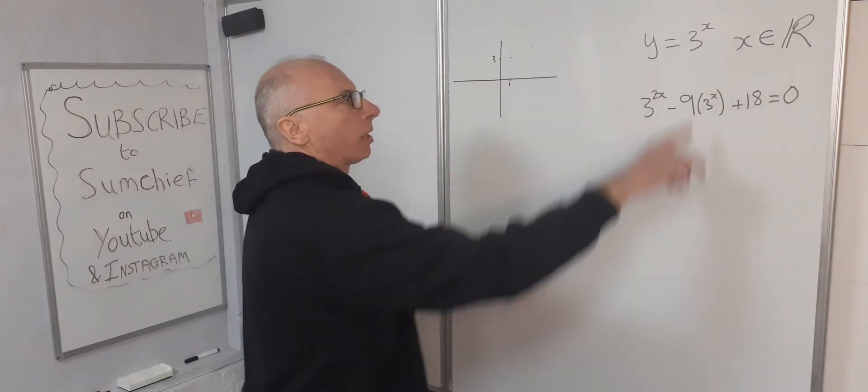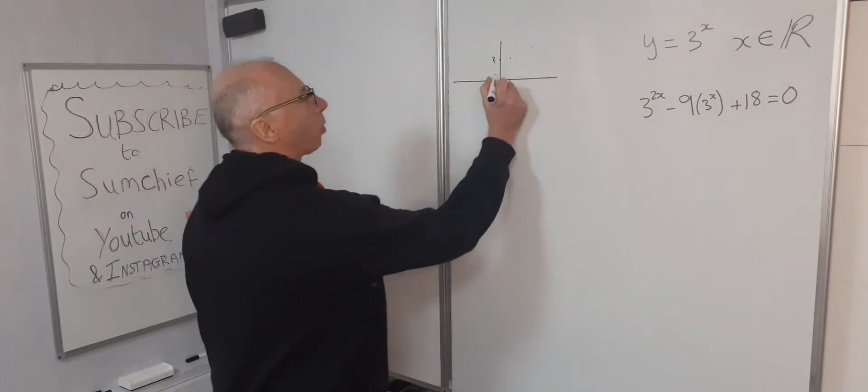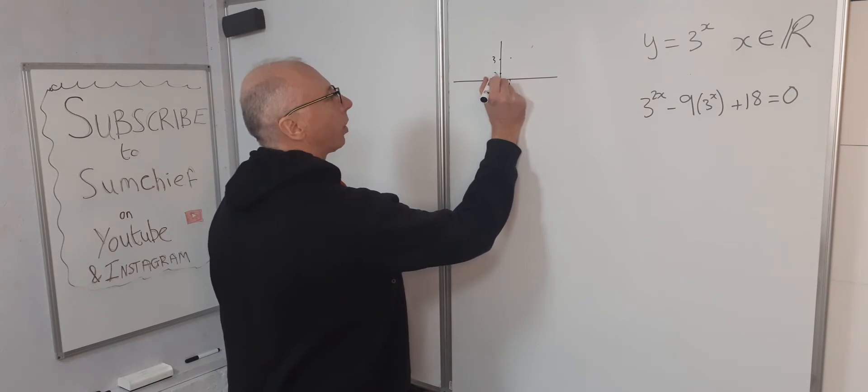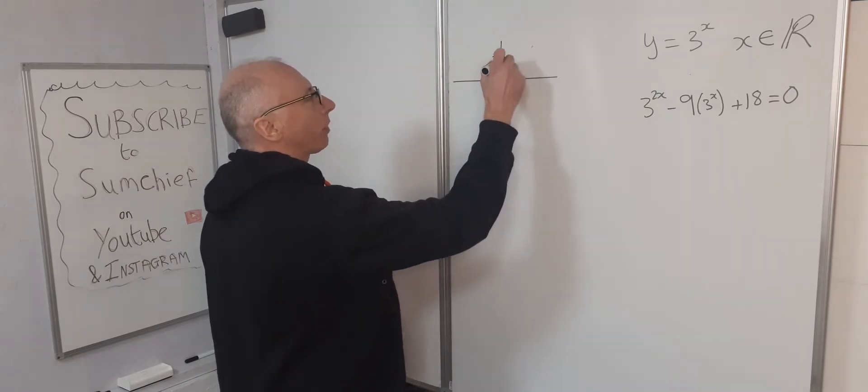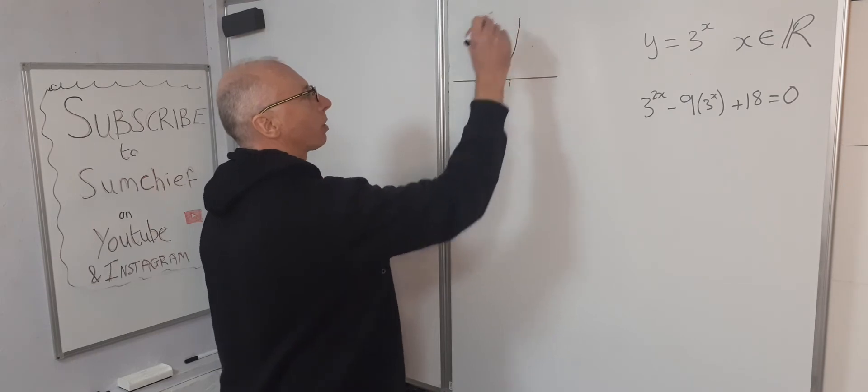When x is 0, 3 to the power of 0, that is 1. So we've got 1 here. So the graph is going to go off up to infinity up here somewhere.